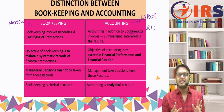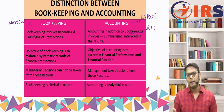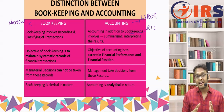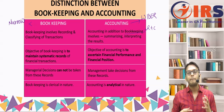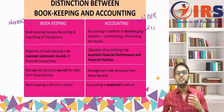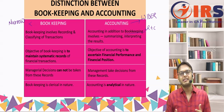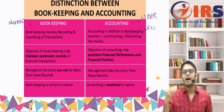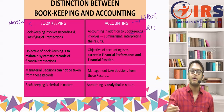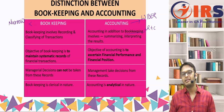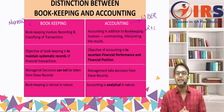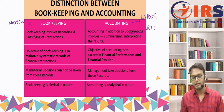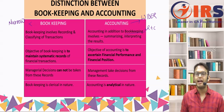Bookkeeping is of a clerical nature — similar repetitive work: a transaction happens, you pass a journal entry, you classify it in the ledger. Whereas accounting is an analytical procedure — you interpret results, analyze financial performance, and decide how to expand the business, whether to go into new markets or expand globally. Big companies make decisions based on their balance sheets.